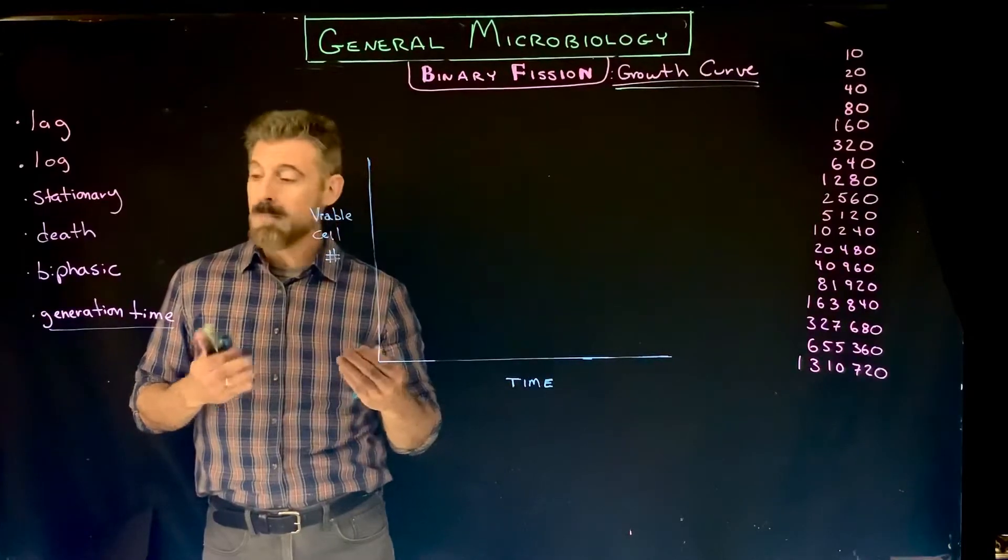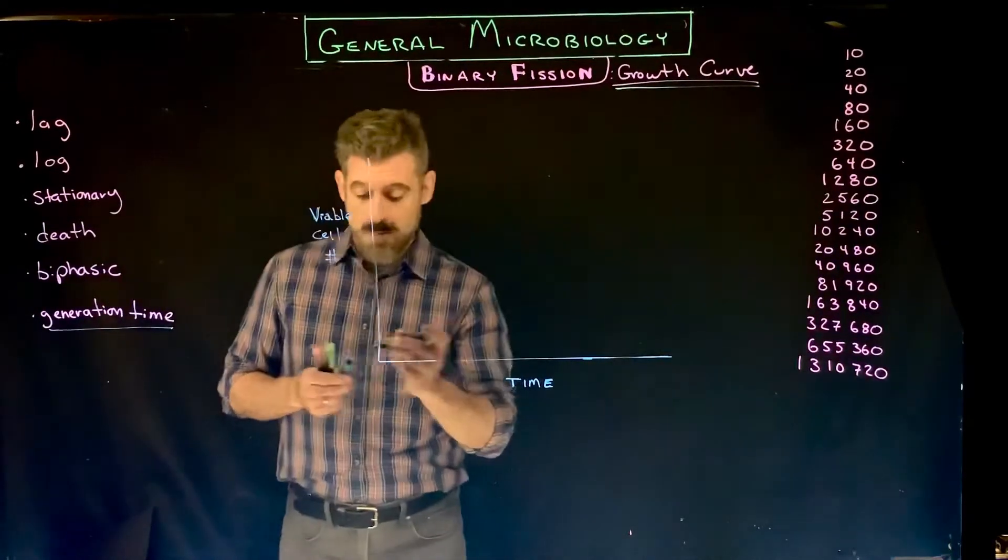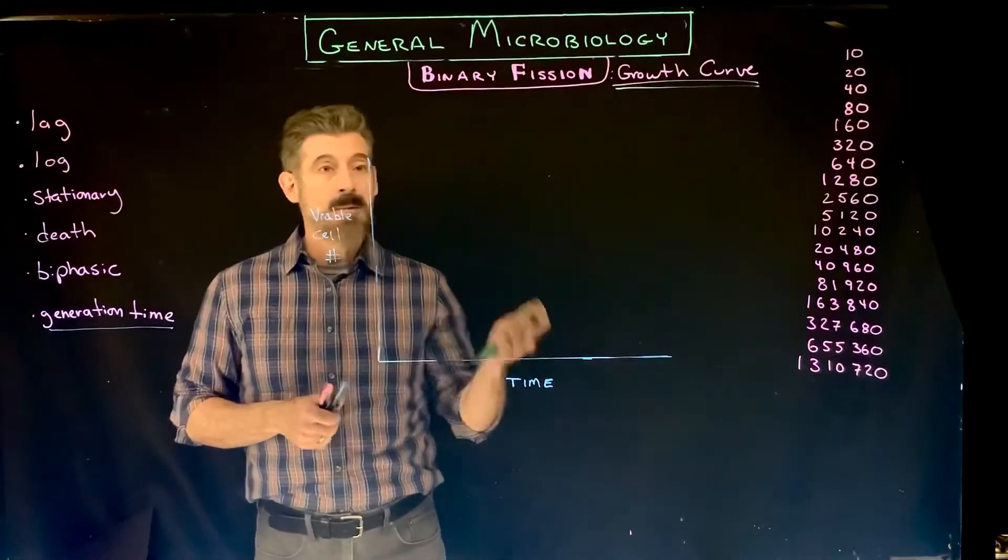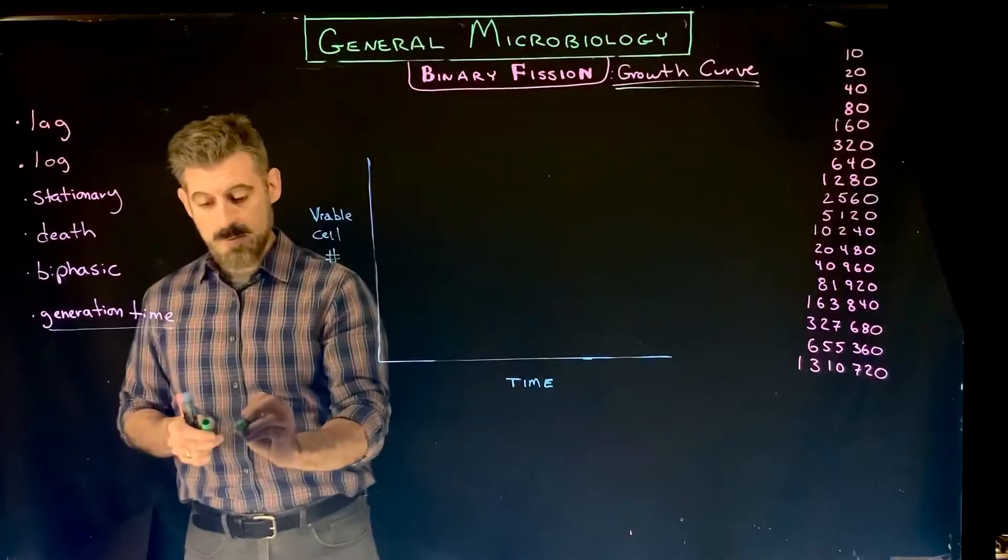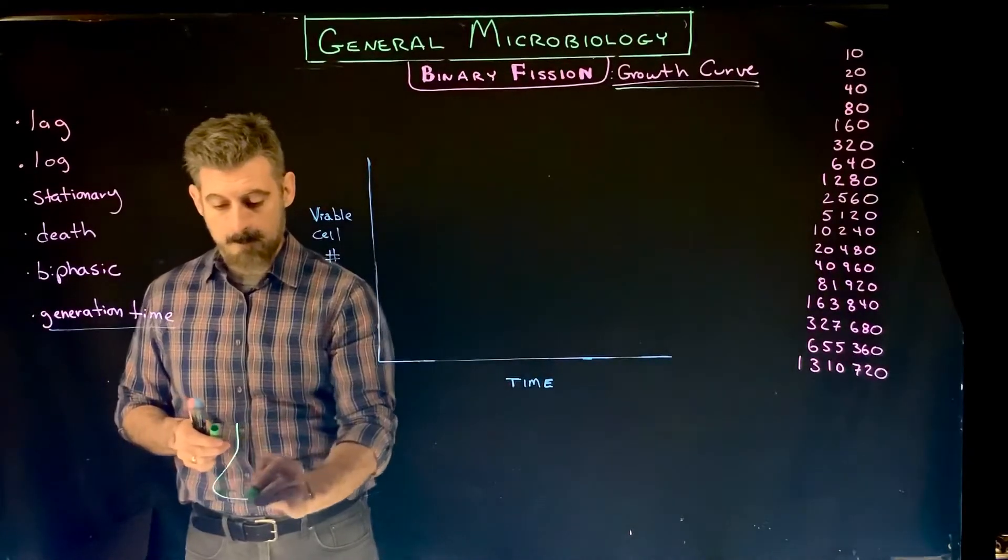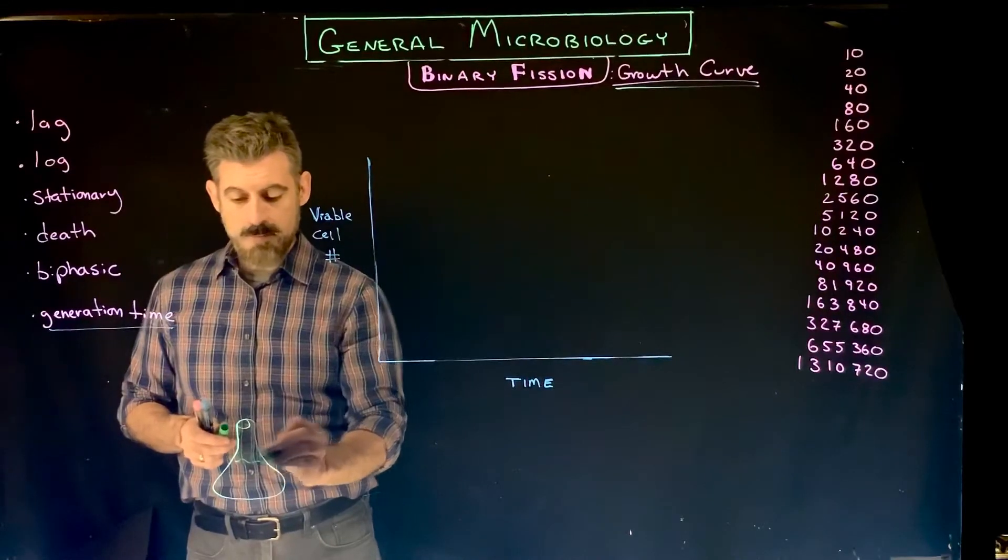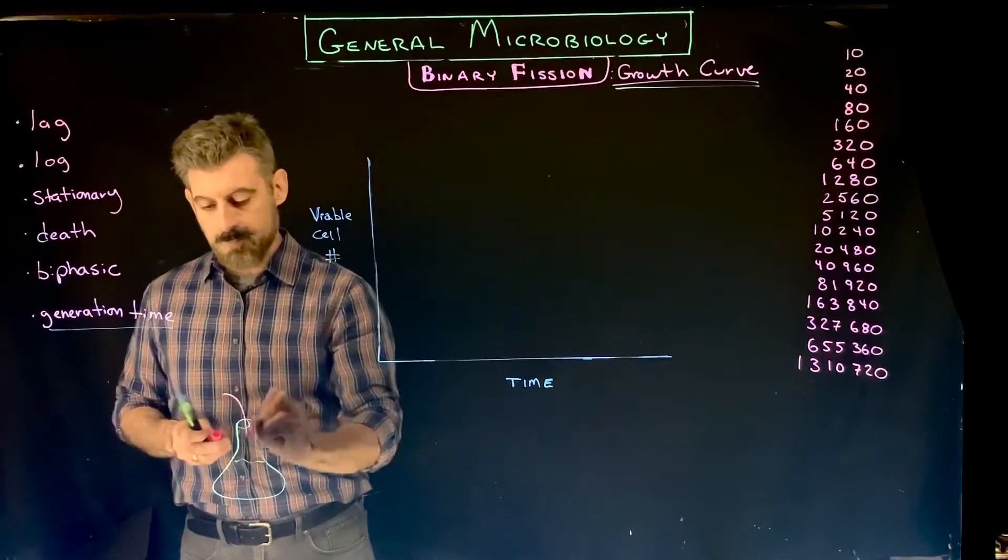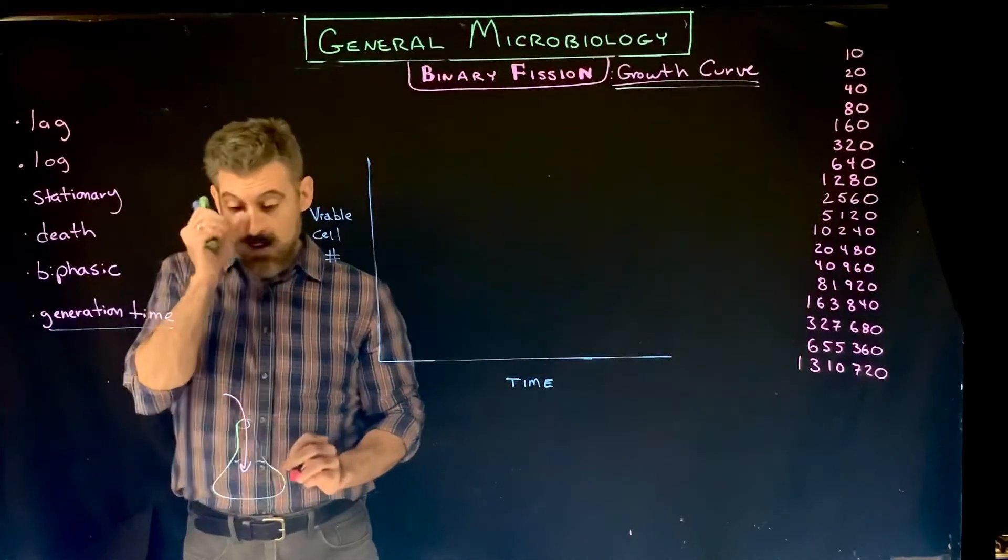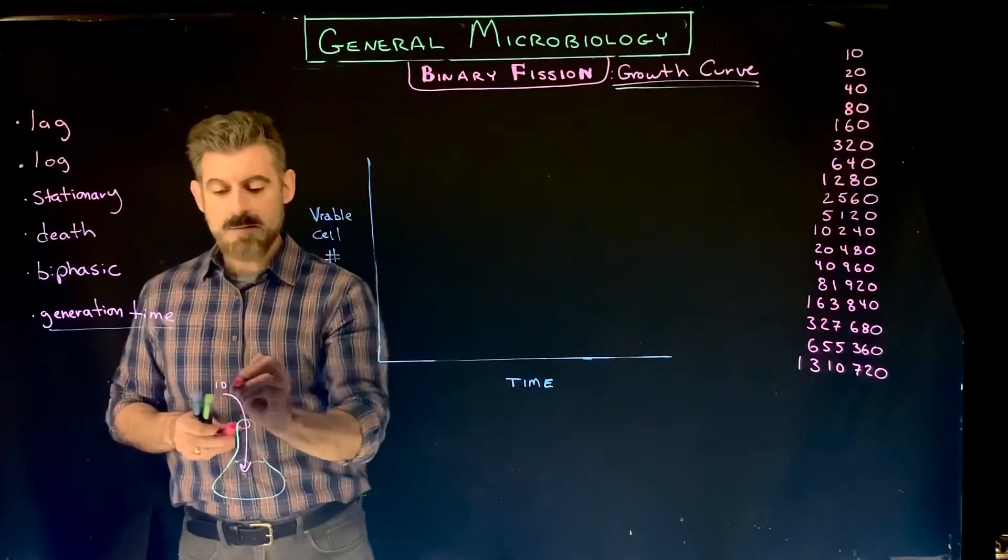If you were to place bacteria into a culture, so if you had a culture flask and it contained some broth and you added bacteria to the culture, let's say you had just a small number of cells, for example 10 cells to the culture.